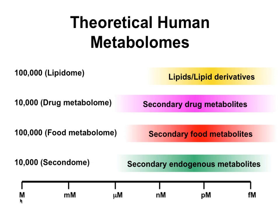Adding all this up, we're talking about several hundred thousand additional metabolites. So 60,000 are describable, but the theoretical metabolome is probably closer to 200,000 to 300,000 compounds, which gets into the realm of the plant metabolome.